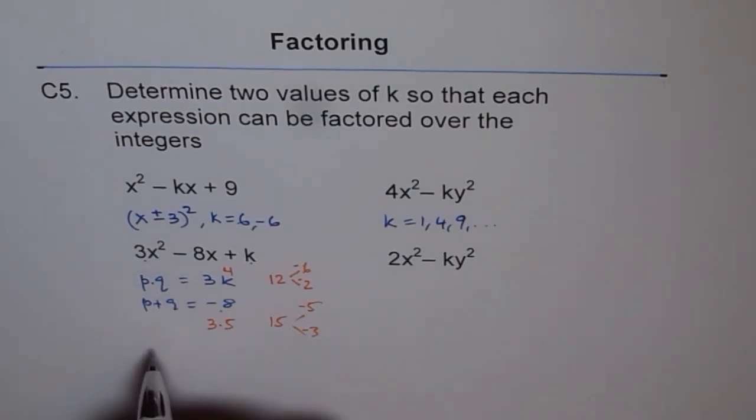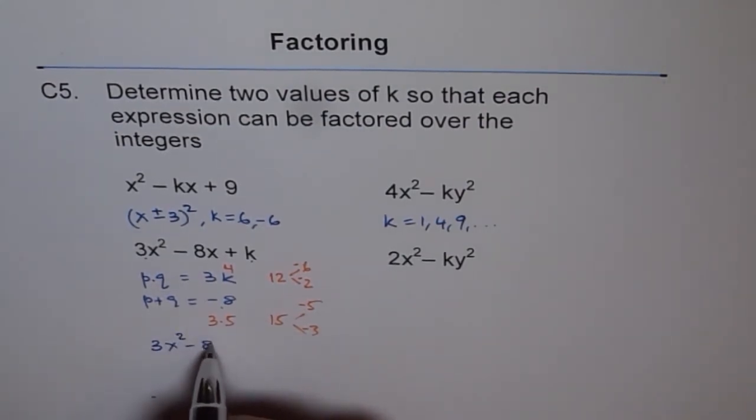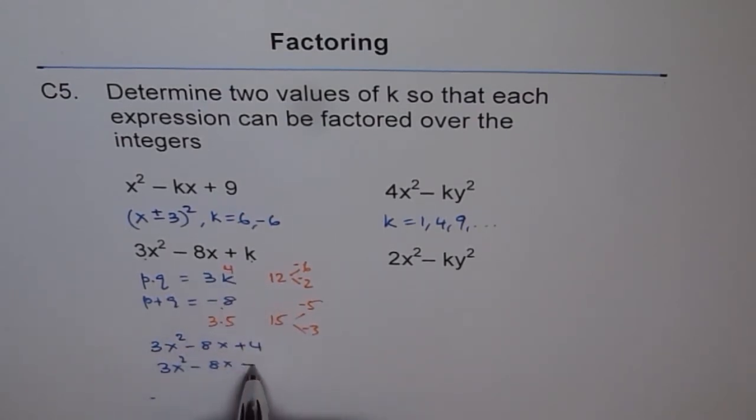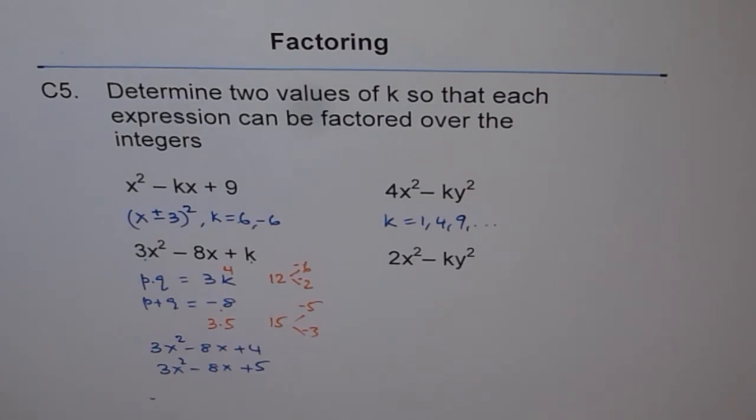And therefore, I can write my answer as 3x square minus 8x plus 4 or 3x square minus 8x plus 5. Both k values will work, correct? So that is how we can do it.